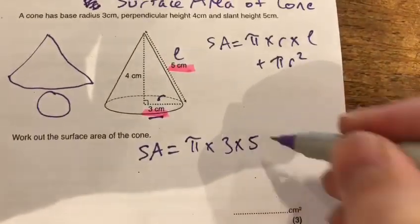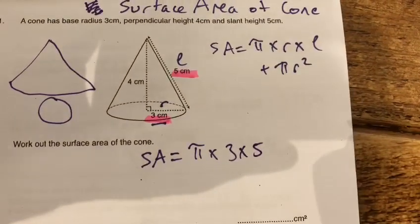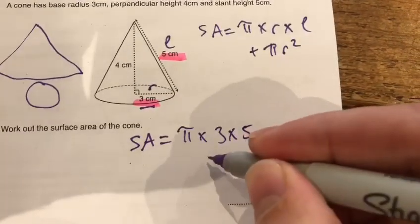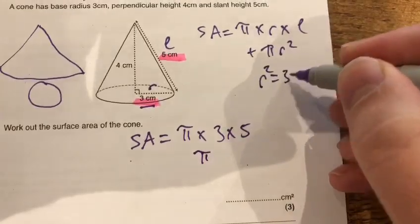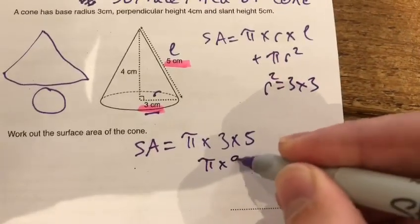So we've got pi times 3 times 5. And then since the radius is 3, the r squared is pi times 9. 3 times 3, which is 9. Okay, good.